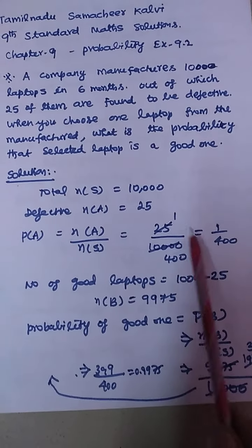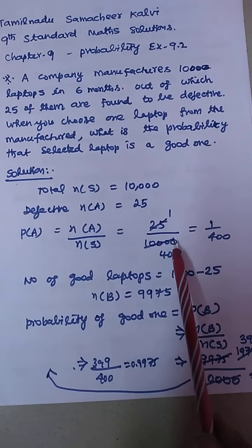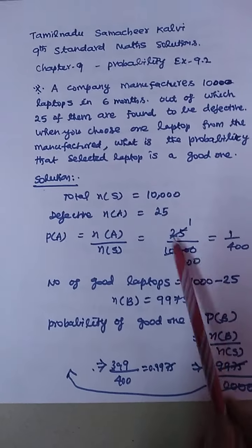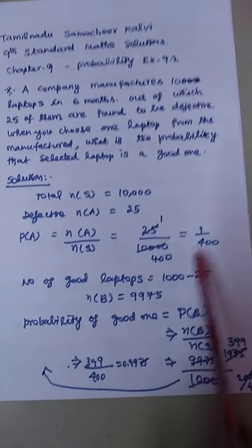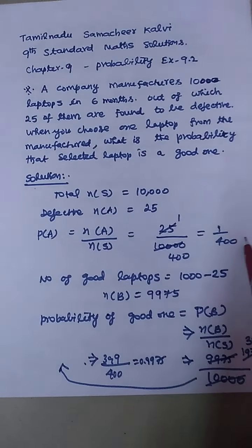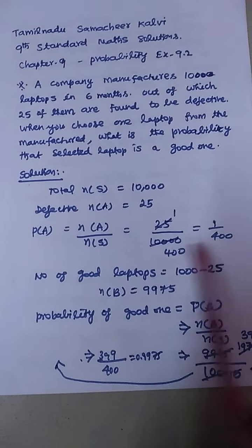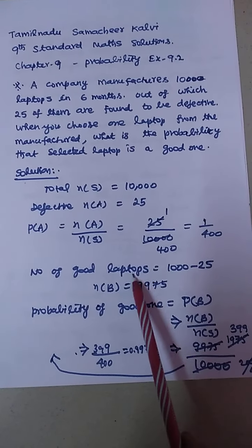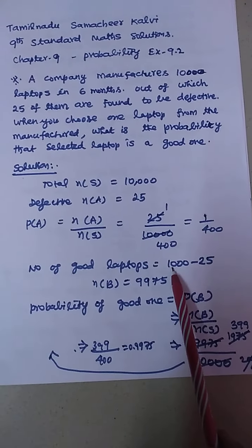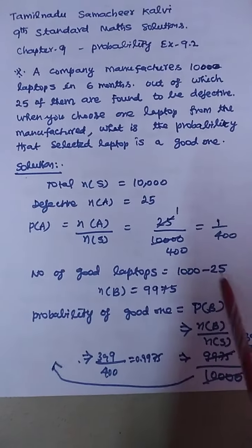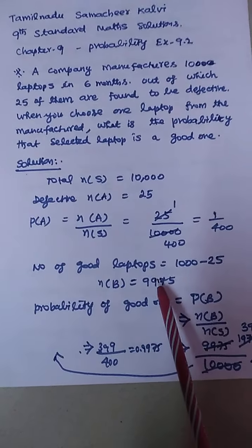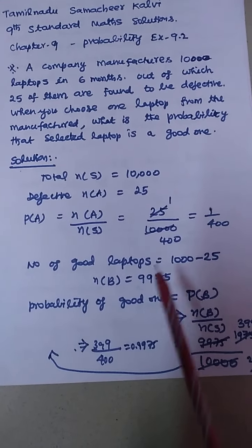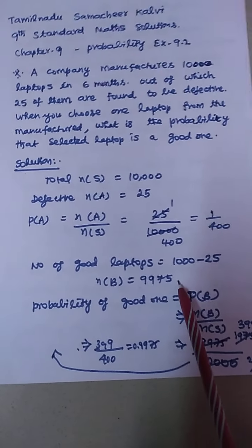P of A equals 25 divided by 10,000, that is 1 by 400. Number of good laptops N of B is equal to 10,000 minus 25, which equals 9,975.